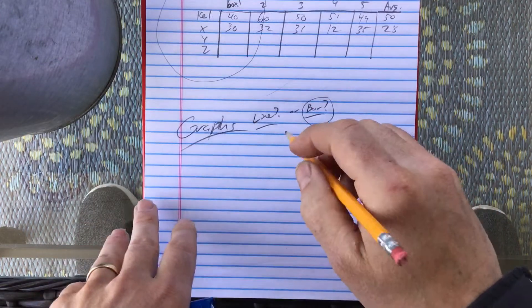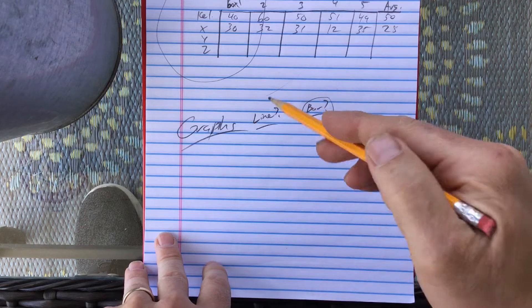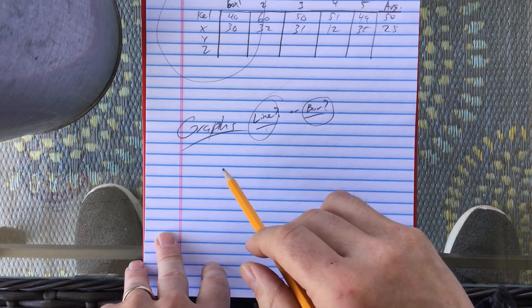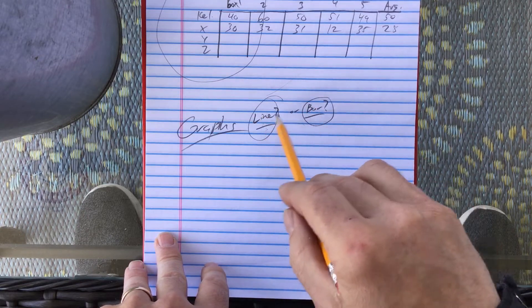If it was trends over time, like the growth of, I don't know, weeds or something like that, that would be a line graph. So you have to determine which one it is, a bar graph or a line graph.